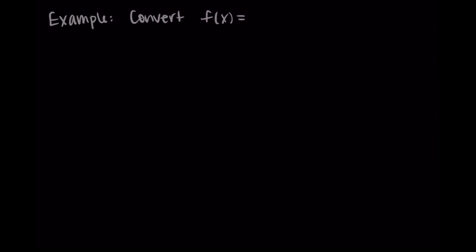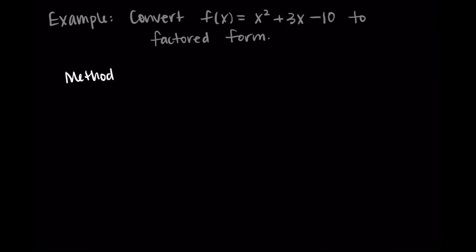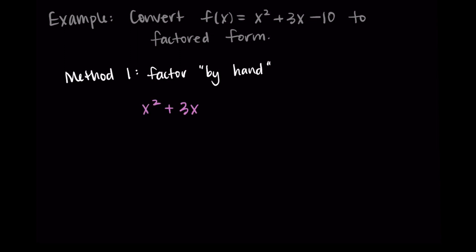Let's go through some examples using both methods. First, let's convert the function f of x equals x squared plus 3x minus 10 into factored form. Our first method is to factor by hand, so we're going to look at x squared plus 3x minus 10 and figure out how to factor it into two terms: x plus or minus something times x plus or minus something.